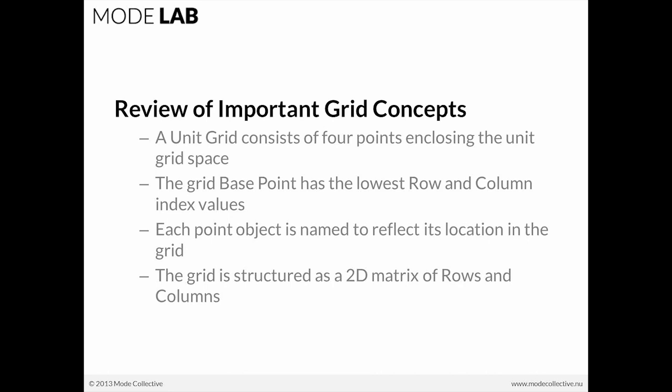So you go from zero, you go to one. From one, you go to two, and two to three, and so forth. The grid base point is the point of the grid which has the lowest row and column index values.